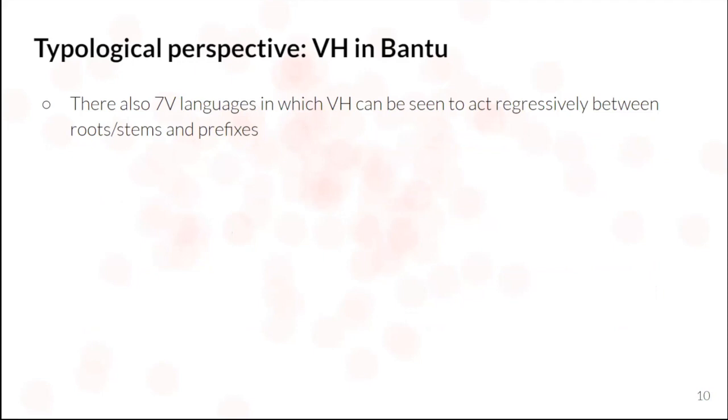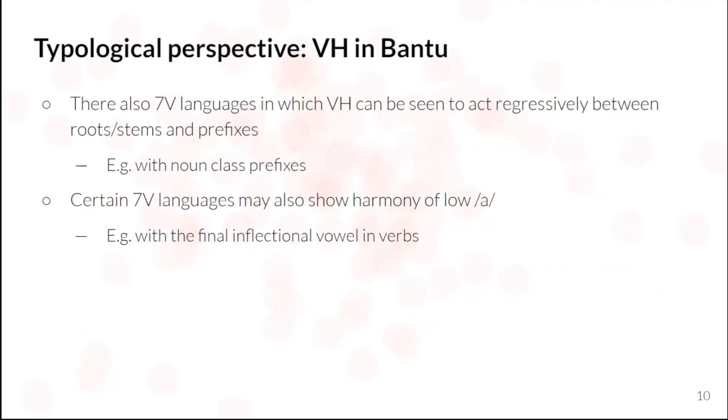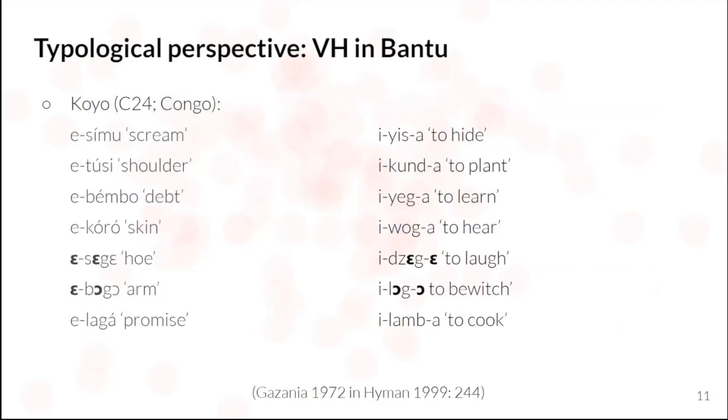And there are also seven vowel languages in Bantu which have vowel harmony that can seem to act regressively between, say, roots and stems and prefixes. So this could be the case with, say, noun class prefixes and also some languages in which we get harmony of the low vowel. And this, for example, might be progressive with, say, the final inflectional vowel in verbs. And so I've got an example here from Koyo, where this noun class prefix E is realized as E before E and O, and then the final inflectional vowel A is lowered to E and O after E and O themselves.